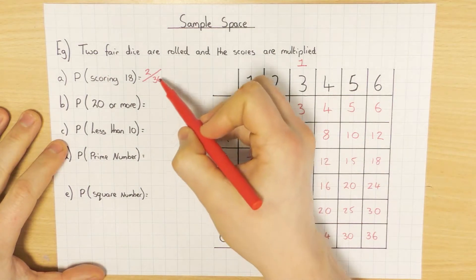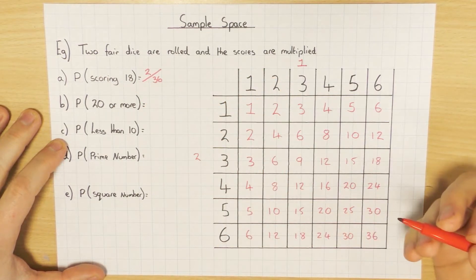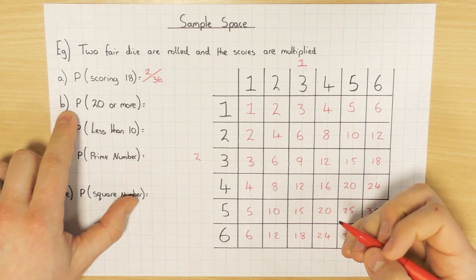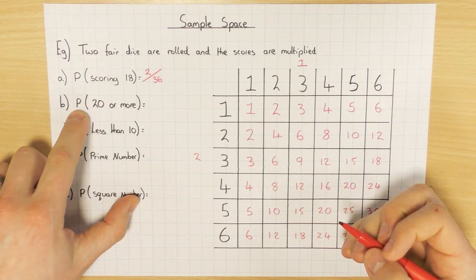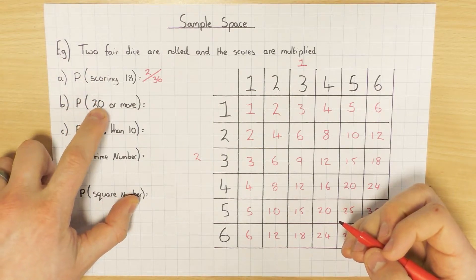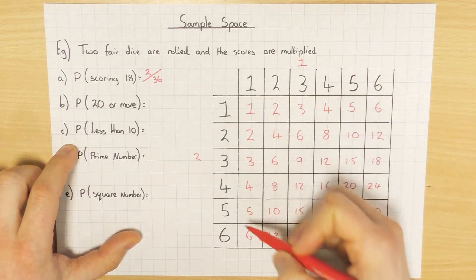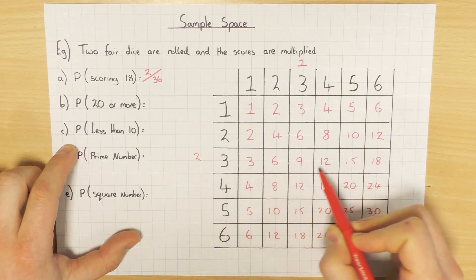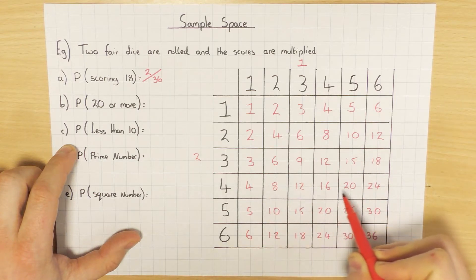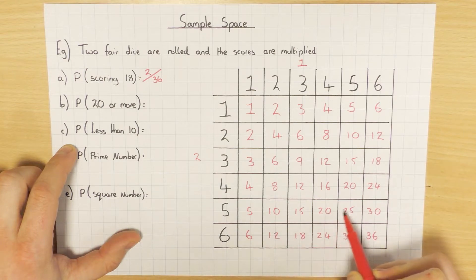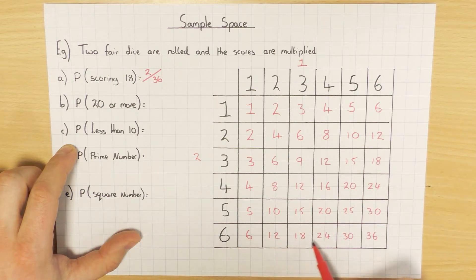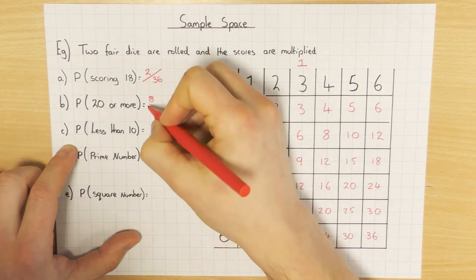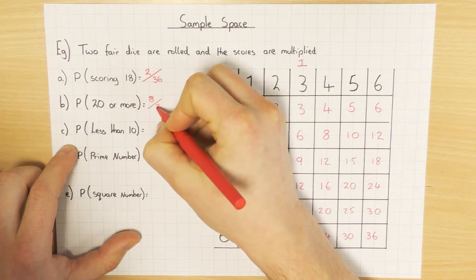With regards to simplifying, if the question says to simplify you can, but with probability we tend to leave it. What's the probability of getting 20 or more? We use our sample space and look for numbers that are 20 or more: there's a 20, counting through - one, two, three, four, five, six, seven, eight - so there are eight numbers that are 20 or more, out of a total of 36 possible outcomes.